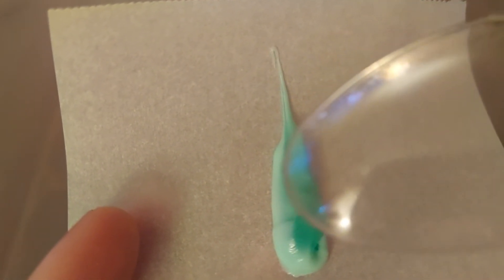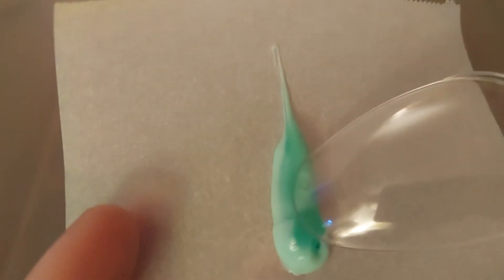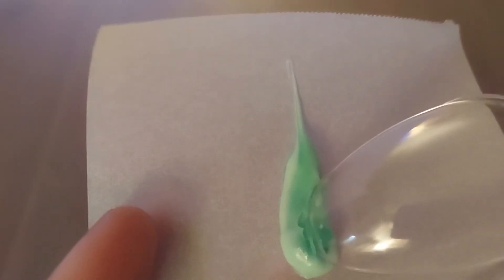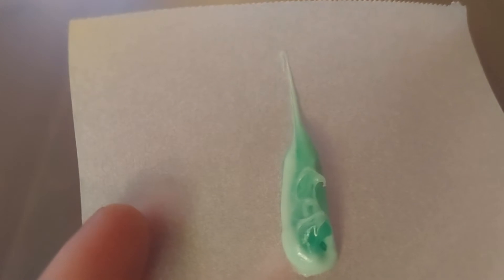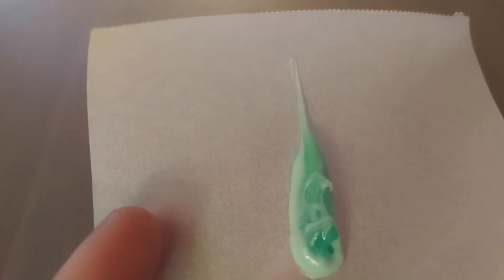So if I take my spoon and if I push down on the toothpaste, I see that it's easy to move. It looks a little bit sticky too. Also, I see that it has color, it has a little bit of color to it, like a light blue color in this case, or greenish blue.